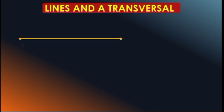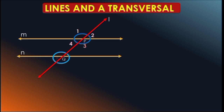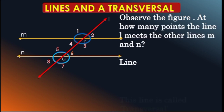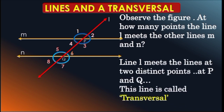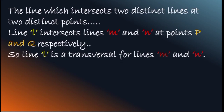Now, Lines and Transversal. Here, I am taking line M and line N which are parallel, and one more line L intersecting them at two distinct points P and Q, making angles: Angle 1, Angle 2, Angle 3, Angle 4, Angle 5, Angle 6, Angle 7, Angle 8. Line L meets lines M and N at two distinct points P and Q. This line is called a transversal — the line which intersects two distinct lines at two distinct points. Line L intersects lines M and N at points P and Q respectively, so line L is a transversal for lines M and N.